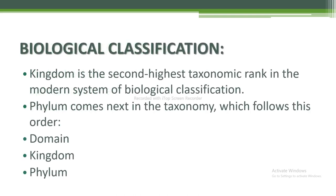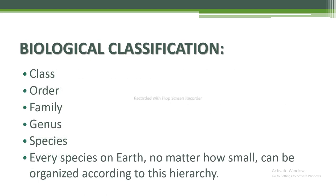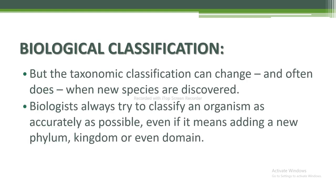Next I am going to discuss biological classification. Kingdom is the second highest taxonomic rank in the modern system of biological classification. Phylum comes next in taxonomy, following this order: domain, kingdom, phylum, class, order, family, genus, and species. Every species on earth, no matter how small, can be organized according to this hierarchy. Taxonomy classification can change and often does when new species are discovered. Biologists always try to classify an organism as accurately as possible, even if it means adding a new phylum, kingdom, or even a domain.